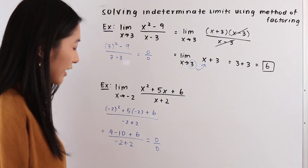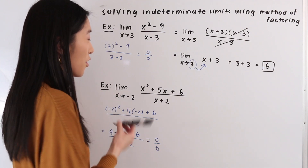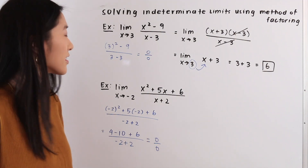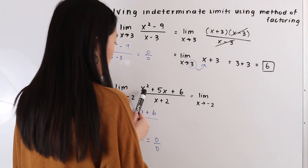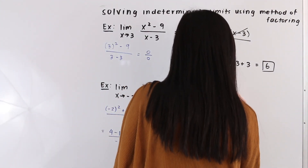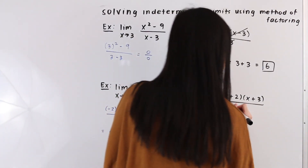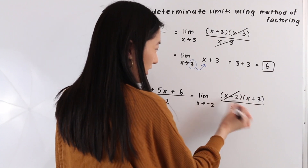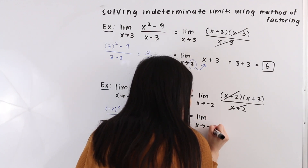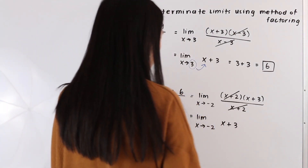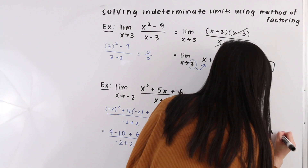The next method we like to try is factoring. Looking at f of x, we see a quadratic in the numerator, which is a huge giveaway that we need to use the method of factoring. So we have the limit as x approaches negative 2, and x squared plus 5x plus 6 factors to x plus 2 times x plus 3, all over x plus 2. The x plus 2 in the numerator cancels with the x plus 2 in the denominator, simplifying to the limit as x approaches negative 2 of x plus 3. Plugging in negative 2, we get negative 2 plus 3, which equals 1.